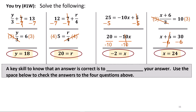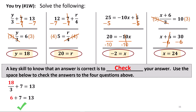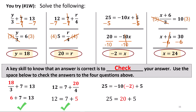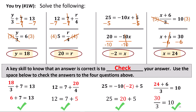A key skill is to check your answer. Use the space below to check the answers to the four questions above. In the first equation, replace y with 18: 18 divided by 3 is 6, and 6 plus 7 is 13 — correct. In the second, replace r with 20: 12 equals 7 plus 20 over 4, which is 5; 7 plus 5 is indeed 12. In the third, replace x with negative 2: negative 10 times negative 2 is positive 20, and 20 plus 5 is indeed 25. In the last, replace x with 24: 24 plus 6 is 30, and 30 divided by 3 is indeed 10. They all check out.